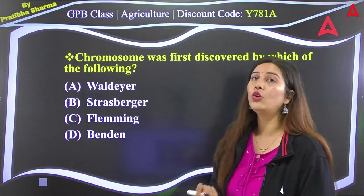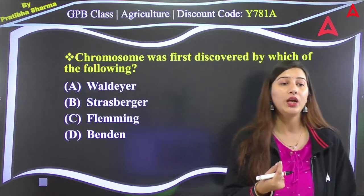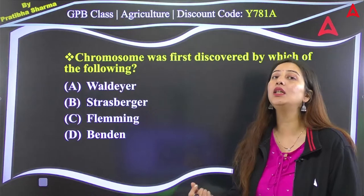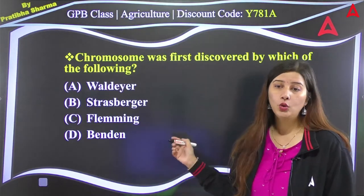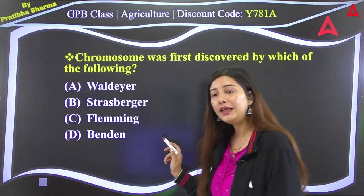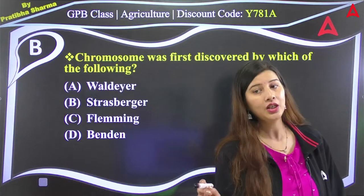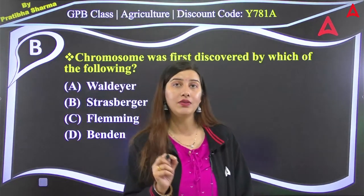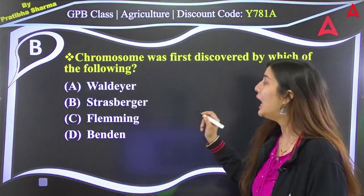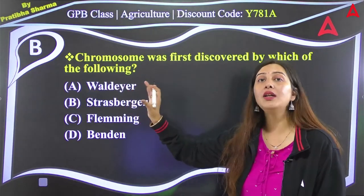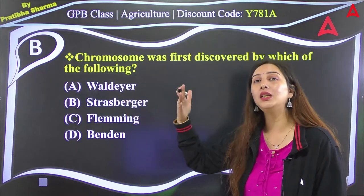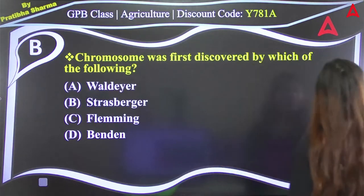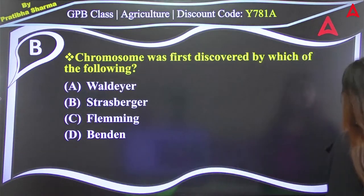The first topic is chromosomes — गुणसूत्र. Who first discovered chromosomes? The right answer is option B: Strasburger discovered chromosomes first. Separately, the term 'chromosome' was coined by Waldyer. So Strasburger discovered that chromosomes exist, and Waldyer gave the term.